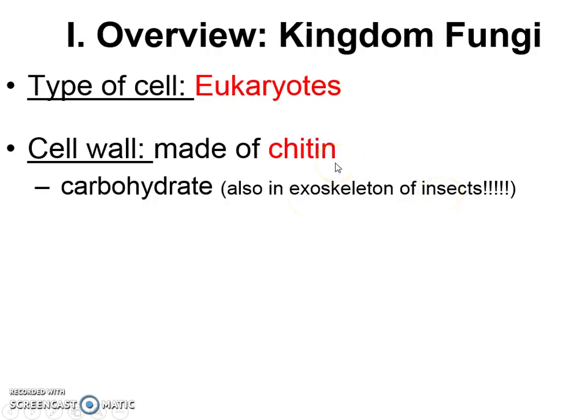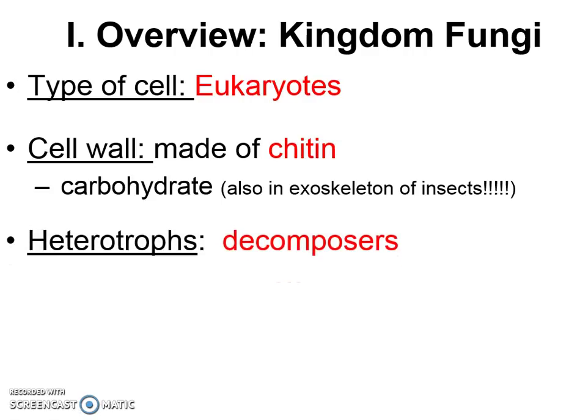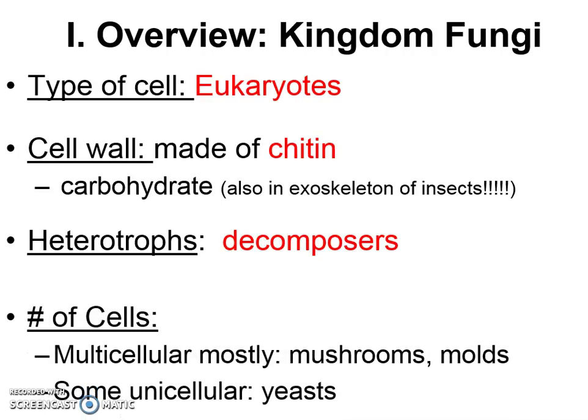Chitin is kind of very firm, and it gives the fungus a lot of structure. Fungi are all heterotrophs. Specifically, the way they consume other things is through decomposition — they are decomposers; they break down things. The majority of fungi are multicellular, like mushrooms and molds, but there are some unicellular or single-celled fungi like yeast. We've used yeast in class, so don't forget — yeast are a fungus. We'll talk about other examples throughout this set of notes.